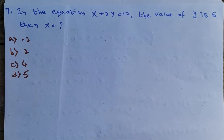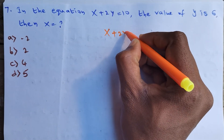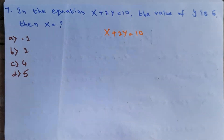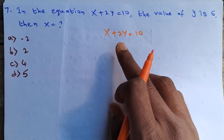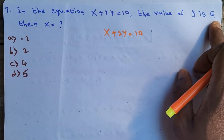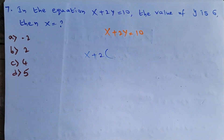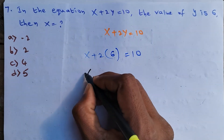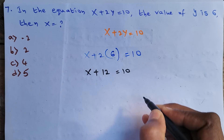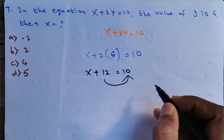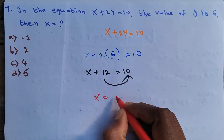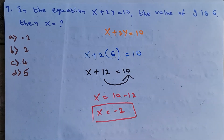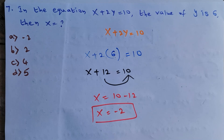Question 7: In the equation x + 2y = 10, the value of y is 6. Find x. Substituting y = 6: x + 2(6) = 10, so x + 12 = 10. Taking 12 to the right side: x = 10 − 12 = −2. So x value is −2 and the correct option is option A.